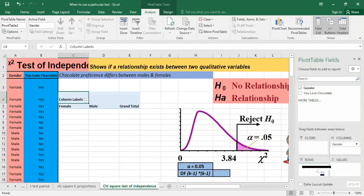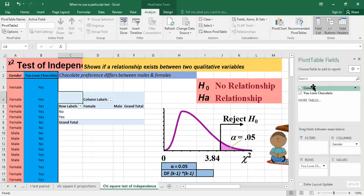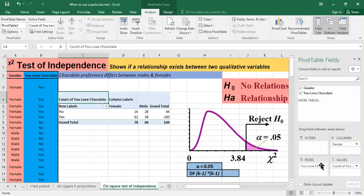In rows, you love chocolate. And in values here, I can put whether gender or chocolate, it will have the same result. So count of the value. So you can see here that I'm having a table that's being created.